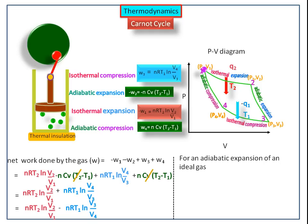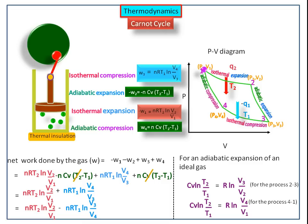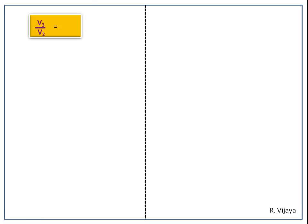For adiabatic expansion of an ideal gas, Cv ln(T2/T1) = R ln(V3/V2), which applies to the process from 2 to 3. Similarly, Cv ln(T2/T1) = R ln(V4/V1), for adiabatic compression from 4 to 1. Since the left-hand sides are equal, we equate the right-hand sides: R ln(V3/V2) = R ln(V4/V1). Cancelling R ln, we get V3/V2 = V4/V1. Interchanging V4 and V2 gives V3/V4 = V2/V1.